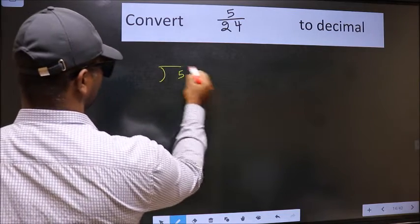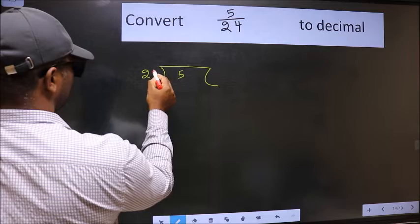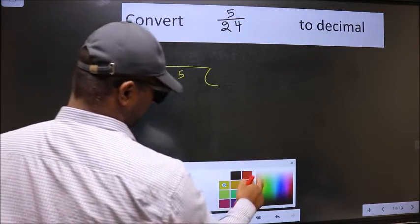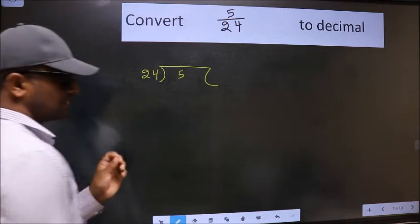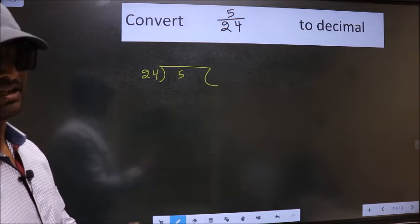5 here and 24 here. This is your step 1.